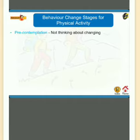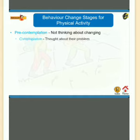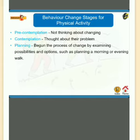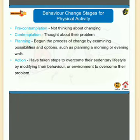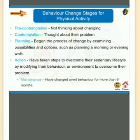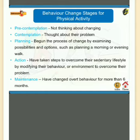The stages of change model consists of five stages: Pre-contemplation — people are not thinking about changing their inactive behavior and are unaware of the problem; Contemplation — people have thought about the problem and recognize they are inactive; Planning — people begin examining possibilities such as a morning or evening walking program; Action — people take steps to modify their behavior or environment; Maintenance — the last stage where a successful and sustained lifestyle change has taken place.